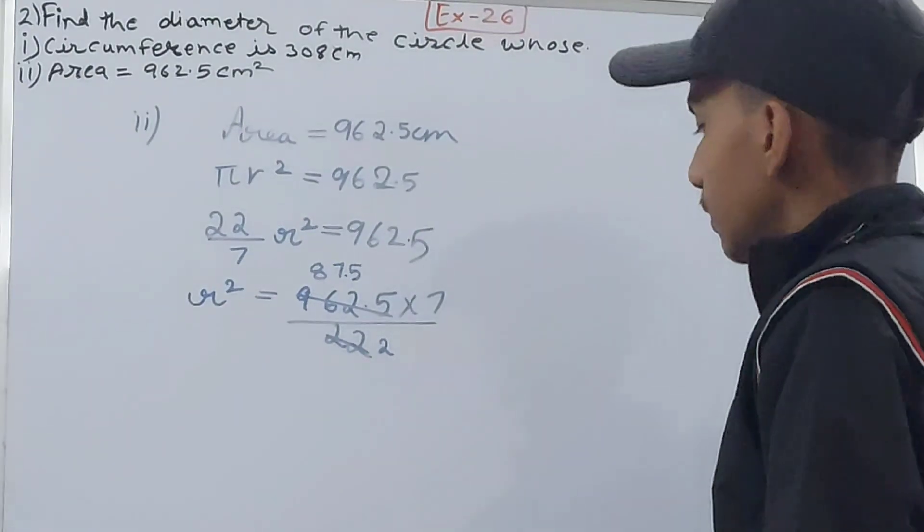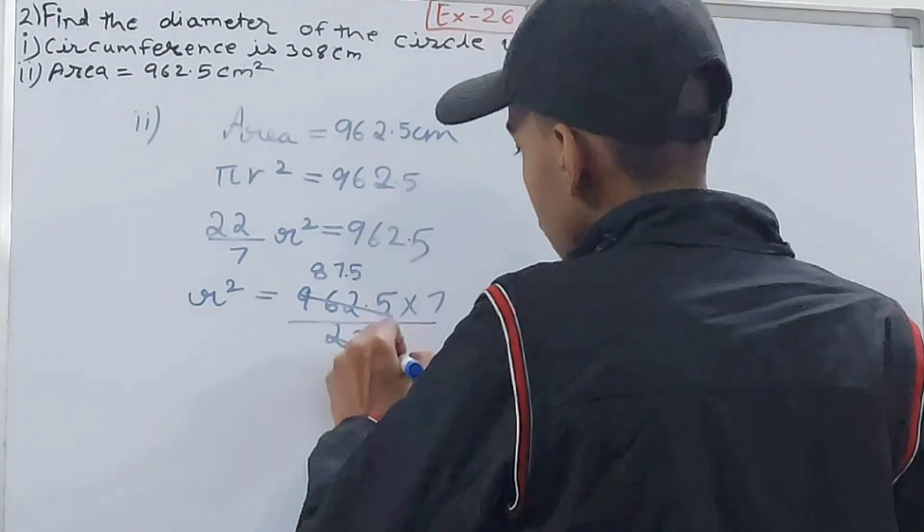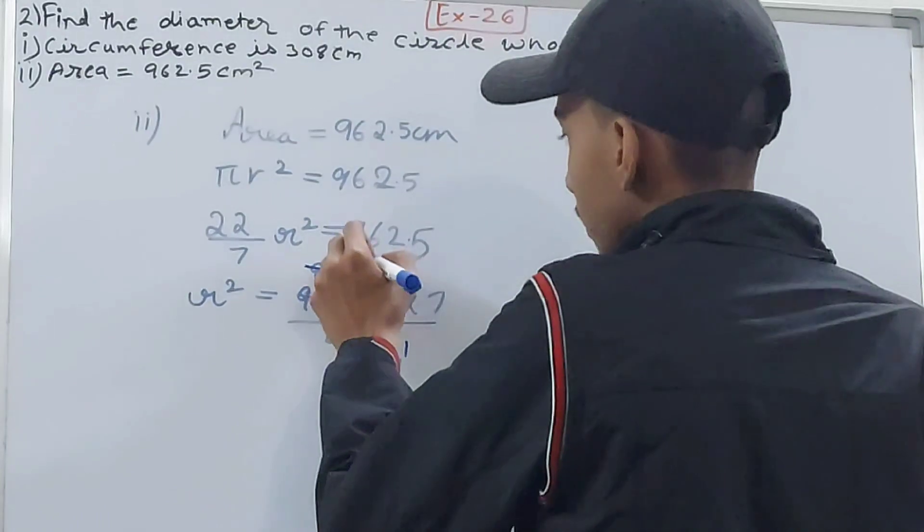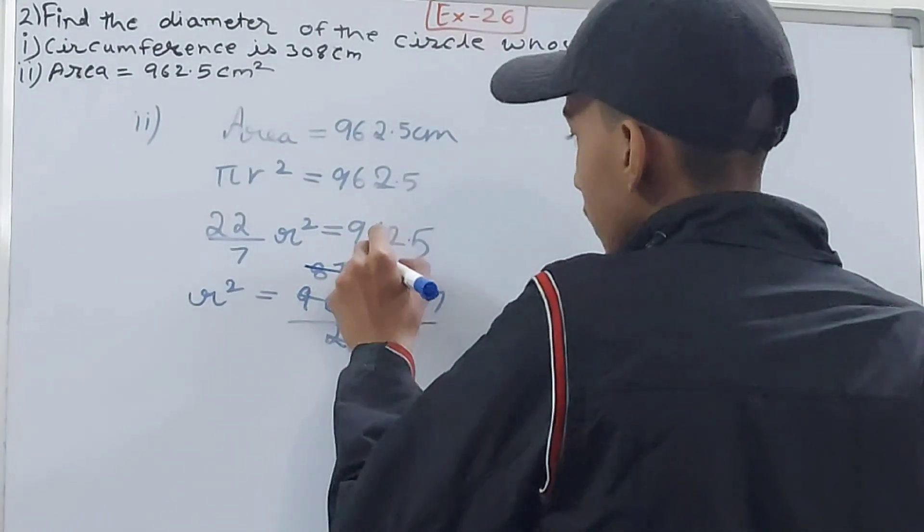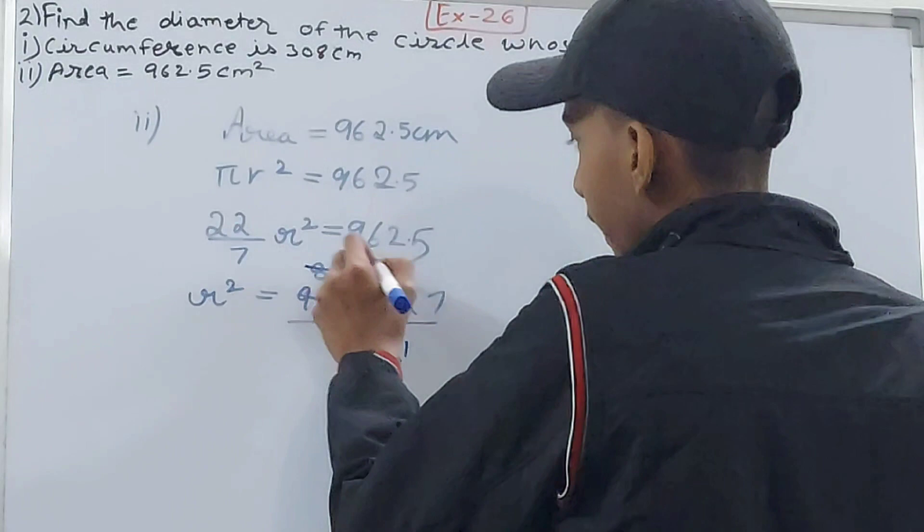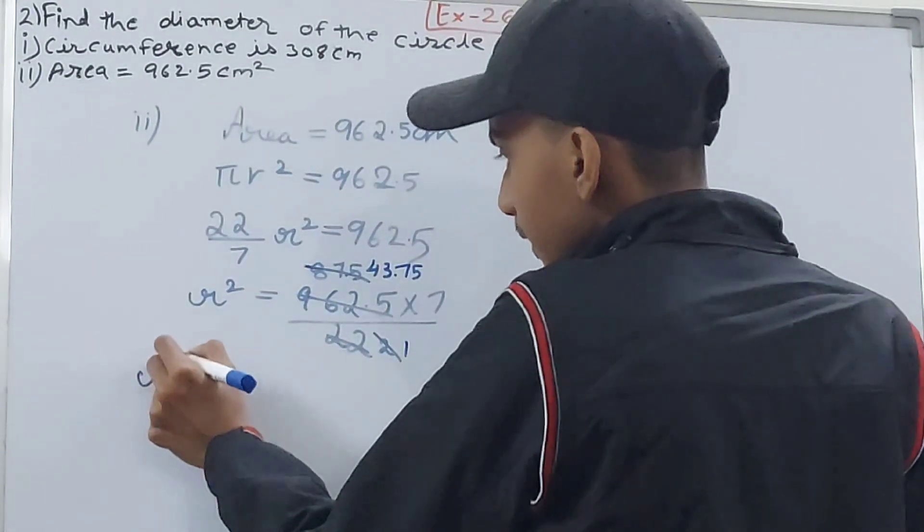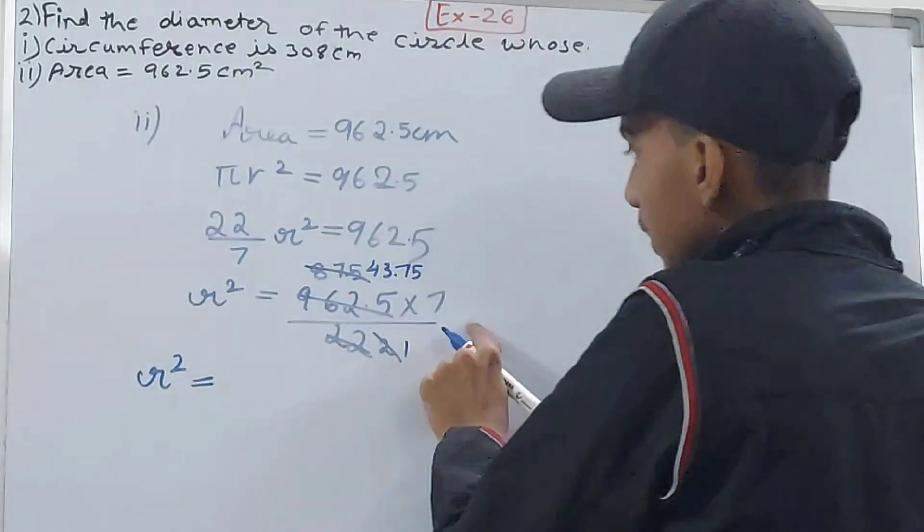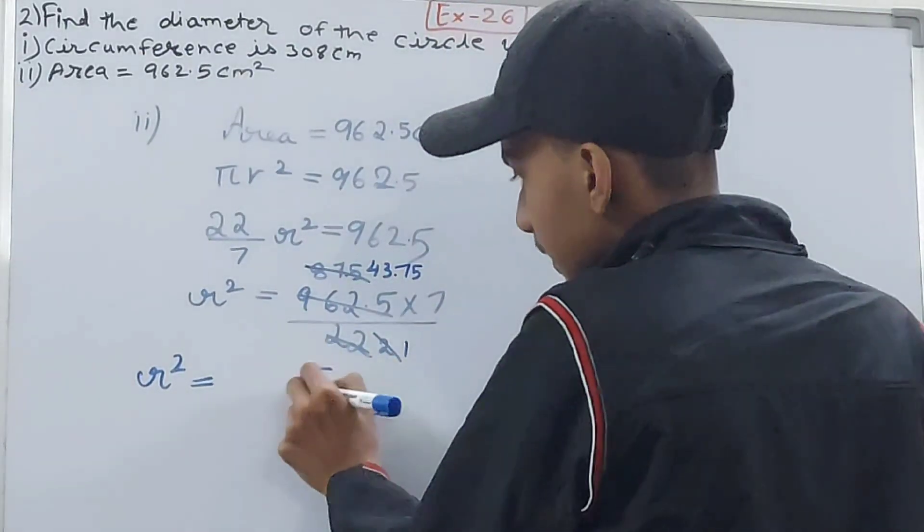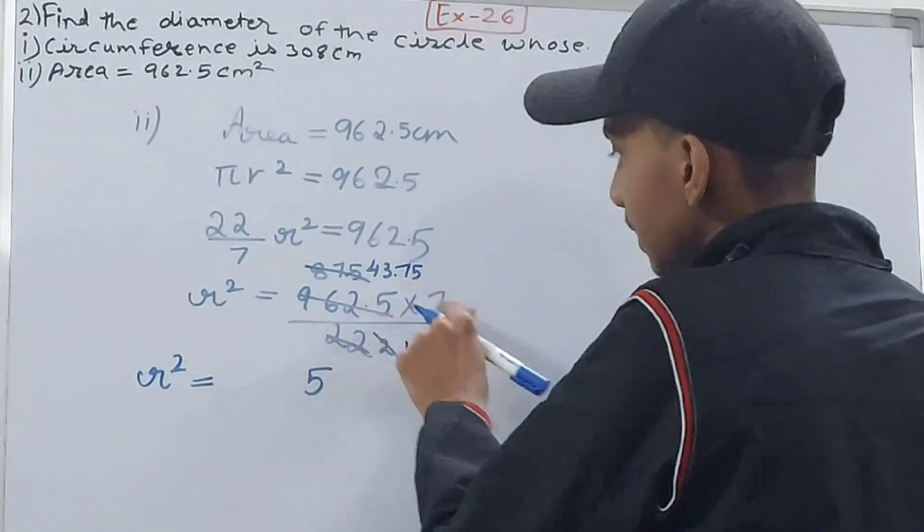So r² equals 7 × 5, that is 35. 3 carried over. 7 sevens are 49 and 3, that's 2. 5 carried over. 7 × 3 is 21 and 5 is 26, and 2 carried over.